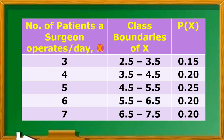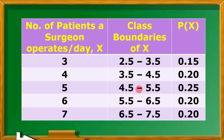Before we move on to our histogram, we have to identify the class boundaries of the random variable x. For each value of x, we subtract 0.5 and add 0.5. So for x = 3: boundaries are 2.5 to 3.5; x = 4: 3.5 to 4.5; x = 5: 4.5 to 5.5; x = 6: 5.5 to 6.5; and x = 7: 6.5 to 7.5.